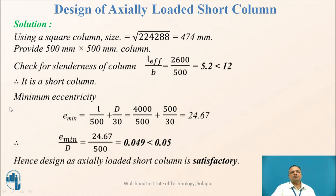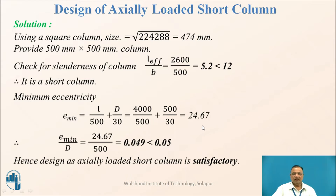We must also check the minimum eccentricity criteria as required by IS code. Minimum eccentricity is given by L/500 + D/30, which works out to 24.67 mm. E_min divided by D = 0.049, which is less than 0.05. Hence, the design of the axially loaded short column is satisfactory.